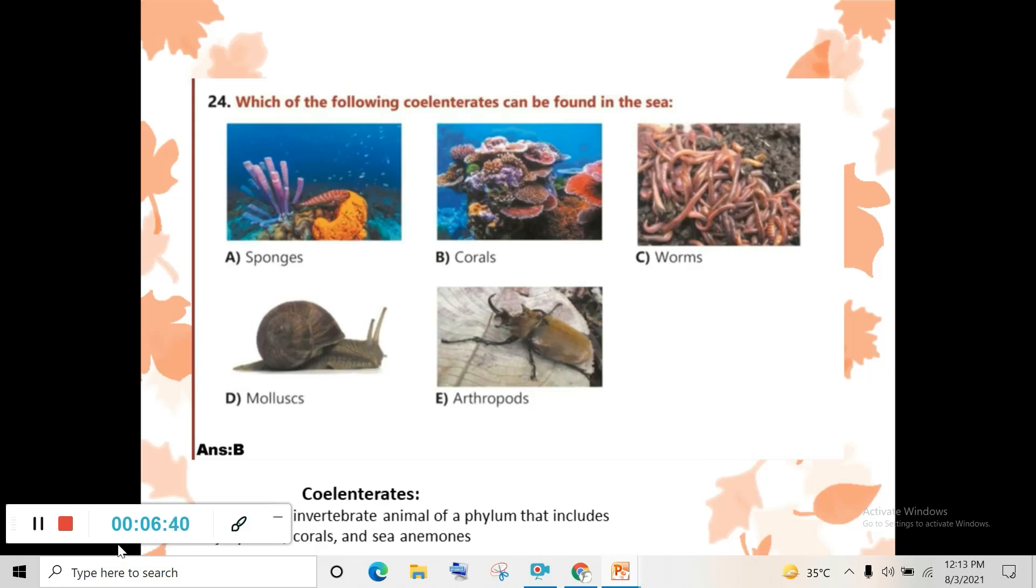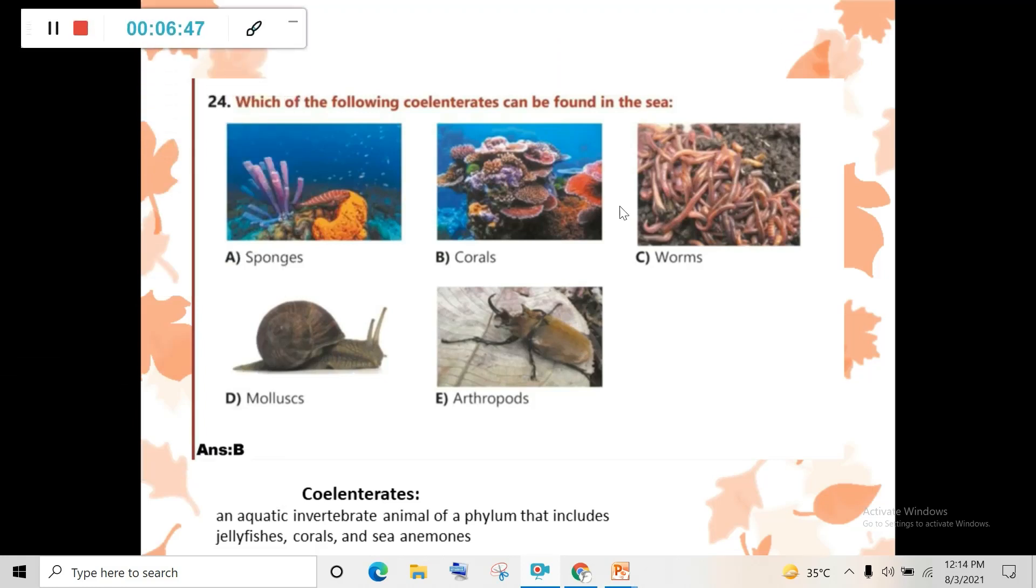Question 24: It's all about another type of invertebrate. There are nine phyla of invertebrates. In another video we will discuss one by one, but in this case, just read the question. Which of the following coelenterates can be found in the sea? Coelenterates have cylindrical bodies. They have one mouth on which all tentacles appear, just like jellyfish. Coral, jellyfish, and sea anemone are coelenterates.